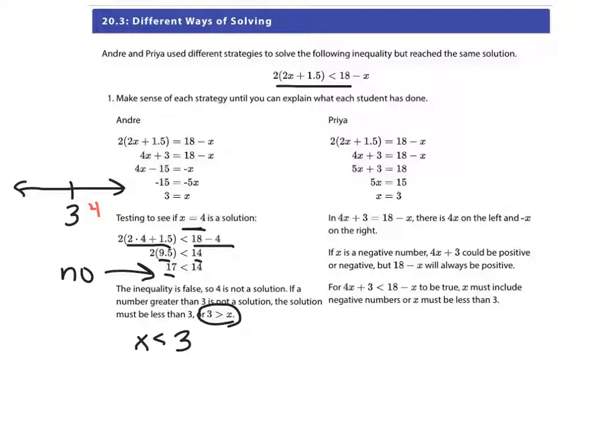Alright, let's look at Priya. Priya took her inequality and set it equal to an equation and got x equals 3. Now look here, in 4x + 3 = 18 - x.